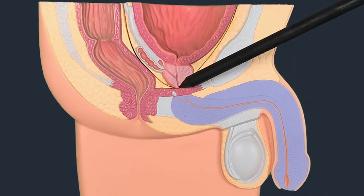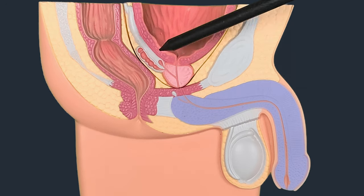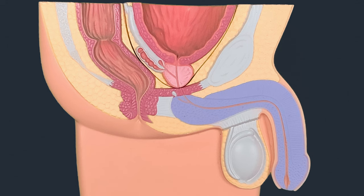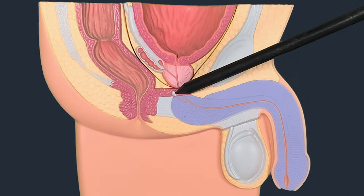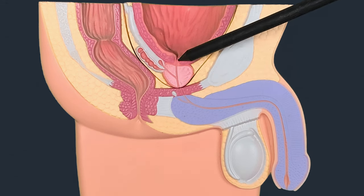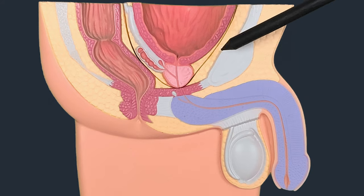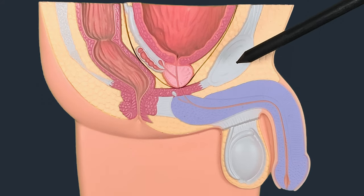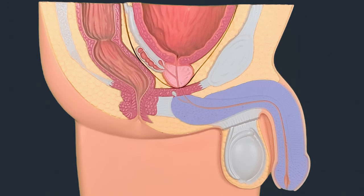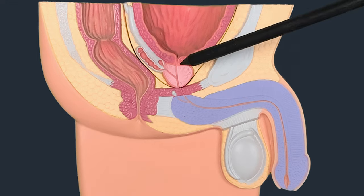If you look at the prostate, it has an apex and a base, an anterior surface and a posterior surface. The apex is closely associated with the urogenital diaphragm and the base is located at the bladder neck. Anteriorly we have the pubic symphysis, and the posterior surface is related to the rectum. It also has inferolateral surfaces, which are closely associated with the levator ani muscle.